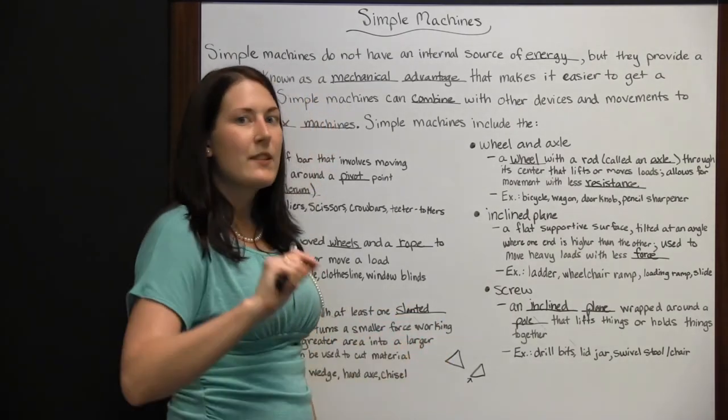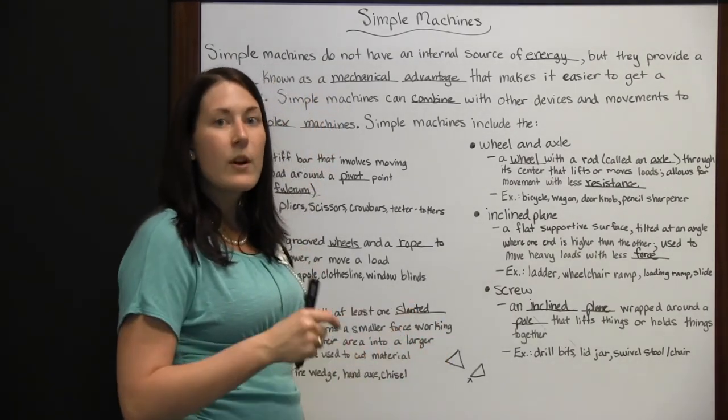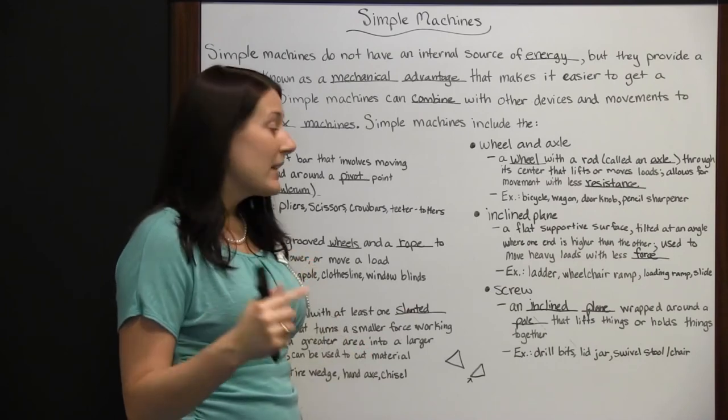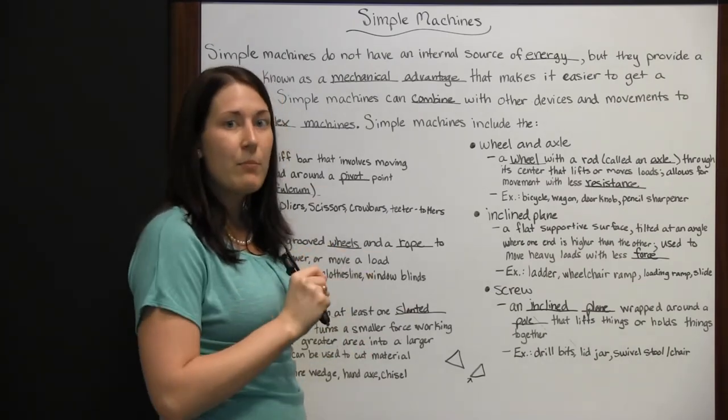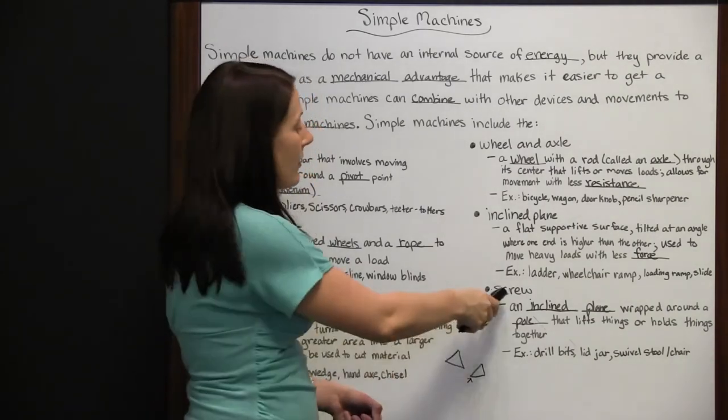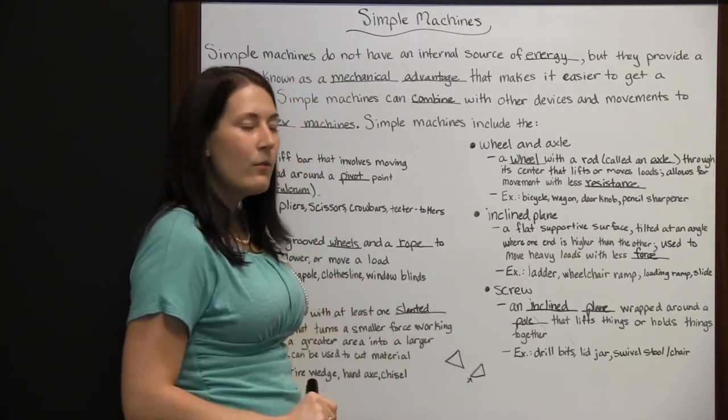Other examples would be drill bits. If you're drilling a hole for a screw, you use different sized drill bits, but they all have an inclined plane around a pole. It's basically a simple machine known as a screw that's making that hole for you.